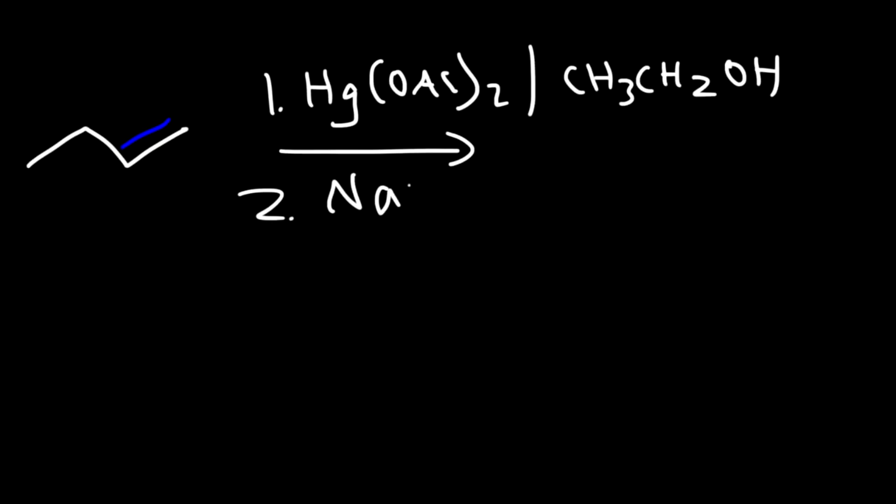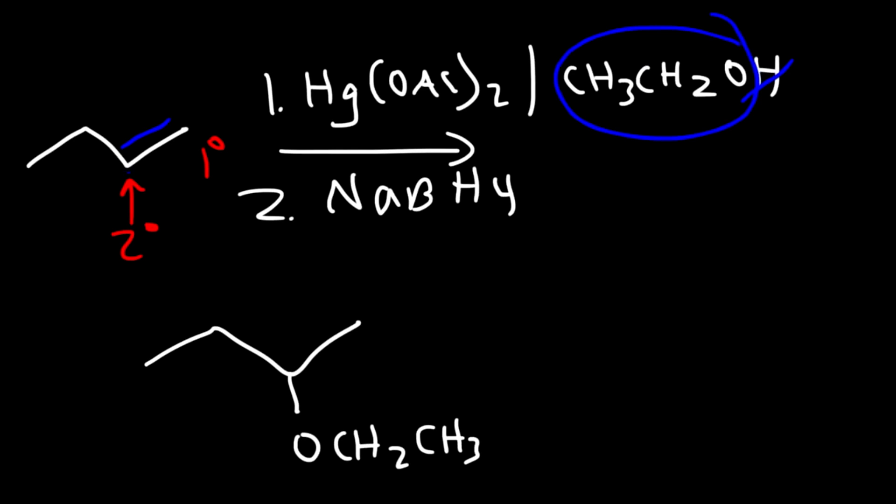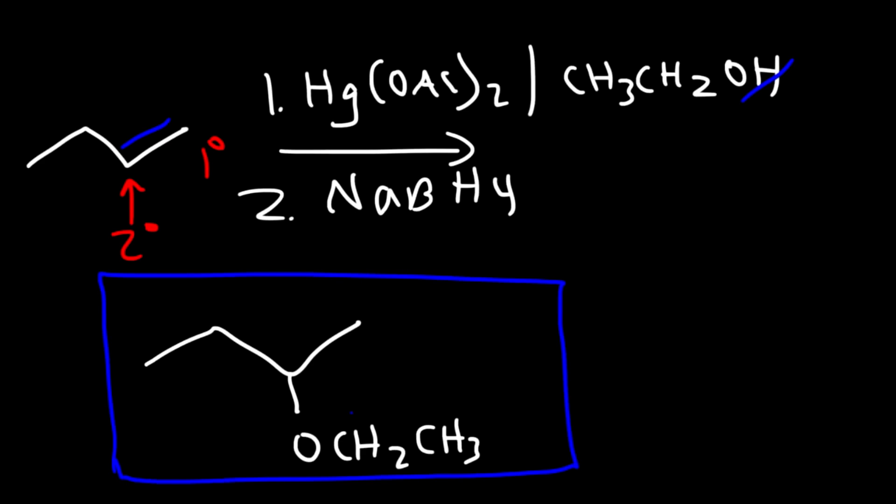Another way in which we can make an ether is the oxymercuration, demercuration, actually the alkoxymercuration, demercuration reaction of alkenes. So we're going to use mercury acetate with ethanol, CH3CH2OH, followed by sodium borohydride. The end result is that we're going to add the ether here on the secondary carbon. This reaction proceeds with Markovnikov regiochemistry. So all we need to do is take off the hydrogen and just add this group to the secondary carbon. That's another way in which you can make ethers using the alkoxymercuration-demercuration reaction.